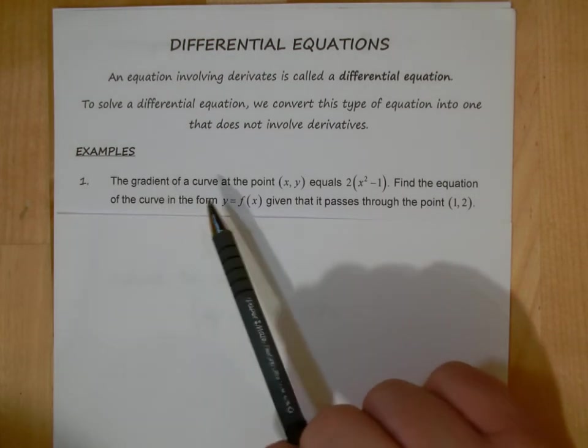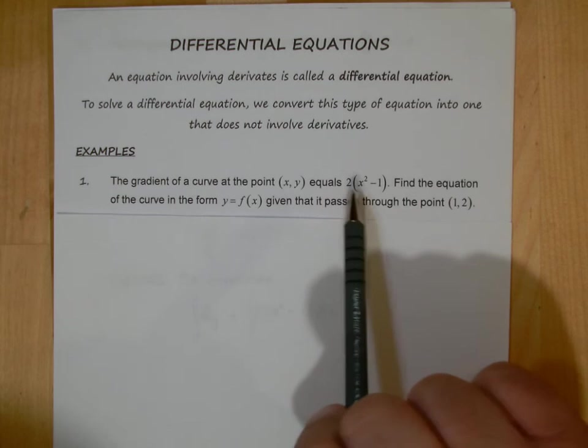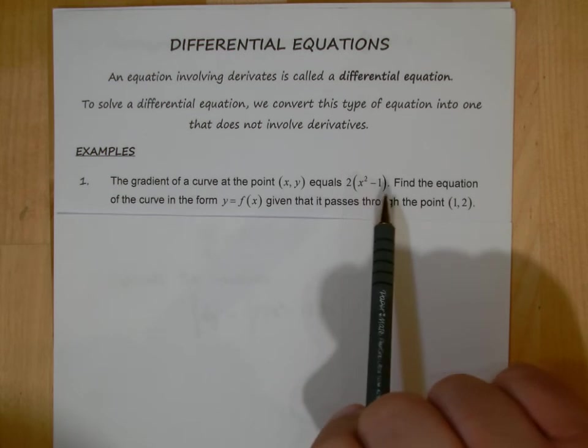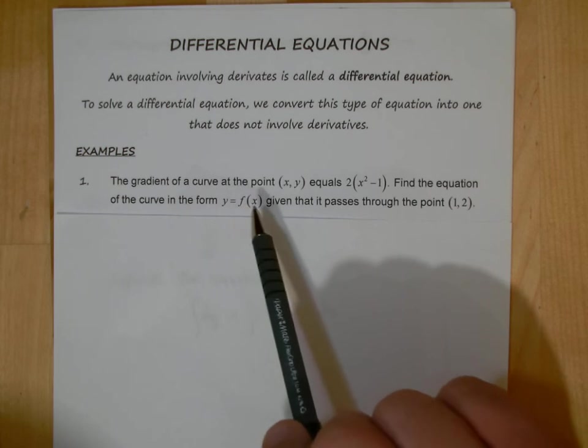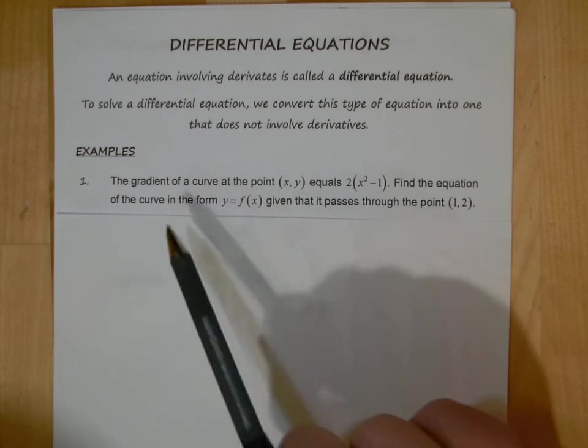Let's look at a simple type here. Number one: the gradient of the curve at the point (x, y) equals 2(x² - 1). Find the equation of the curve in the form y = f(x) given that it passes through the point (1, 2).